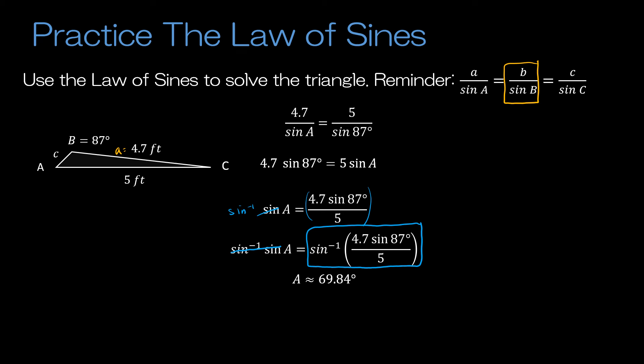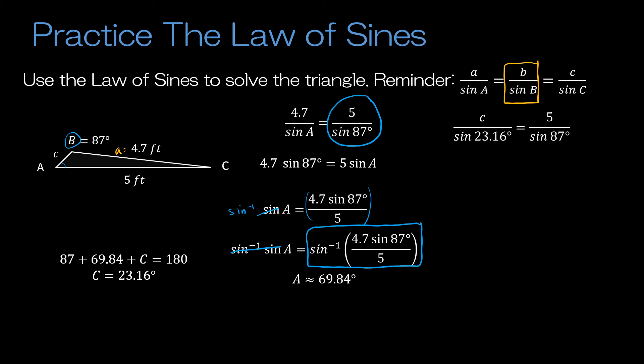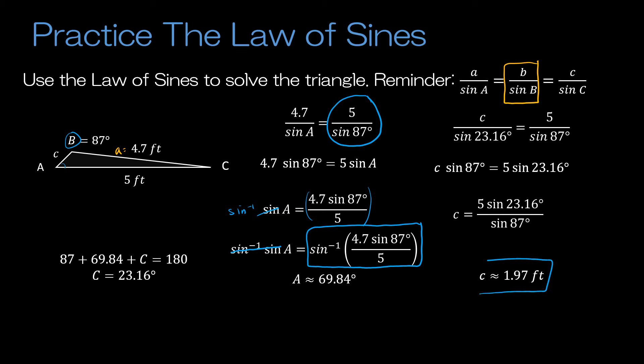Once we know angle B and the newly found angle A, we can add and subtract from 180 to find angle C, which is 23.16 degrees. Then when I use the Law of Sines again, I use that same exact ratio but this time with C and sine of 23.16. Cross multiply and divide — in this case I don't need the inverse sine. I get about 1.97 feet. So when I say solve the triangle: I found the missing side C as 1.97 feet, and I found angle A and angle C.